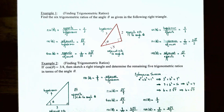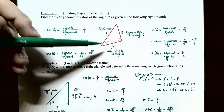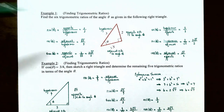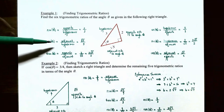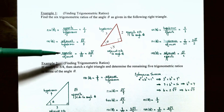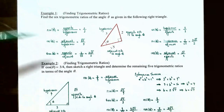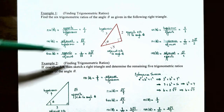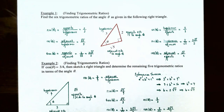Cosine of theta is the adjacent side divided by the hypotenuse: √5 divided by 3, so cosine of theta is √5/3. Tangent of theta is opposite divided by adjacent: 2 divided by √5. Rationalizing the denominator by multiplying top and bottom by √5 gives tangent of theta as 2√5/5.